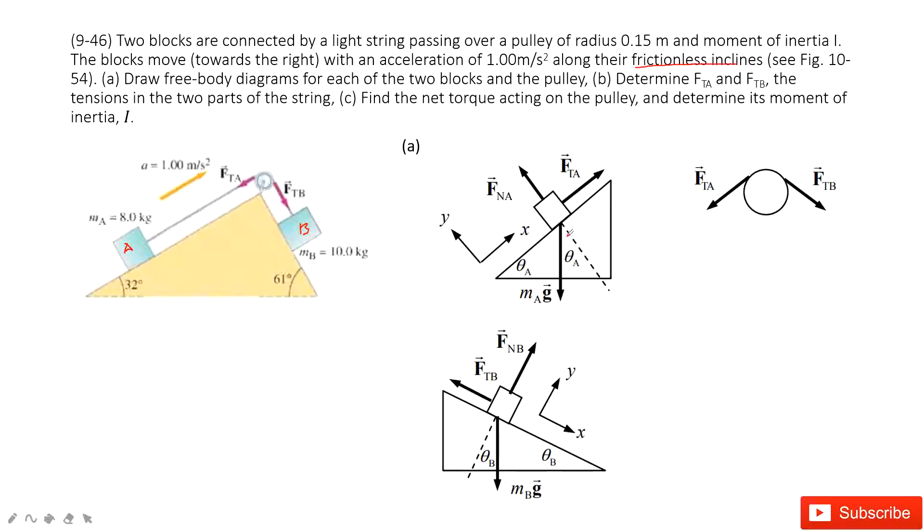So for A, we only have three forces: gravity, normal force, and tension. And similarly for B, we have the gravity always pointing down, the tension FTB, and the normal force. And also for this pulley, on the string on the two sides of the pulley has the FTA and FTB. So this one, we draw the force.